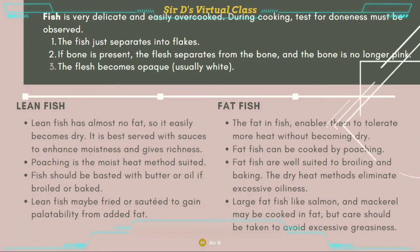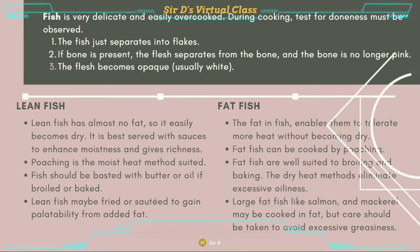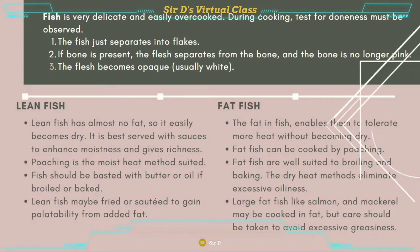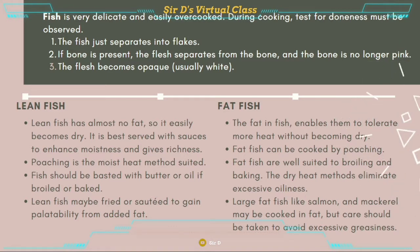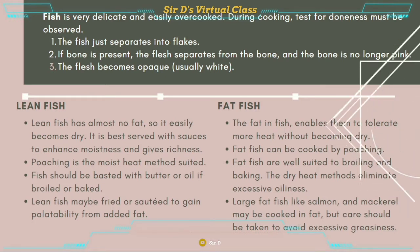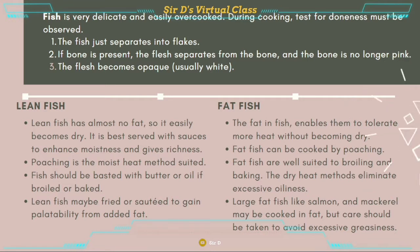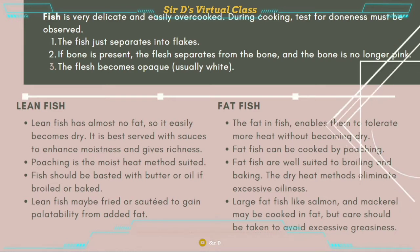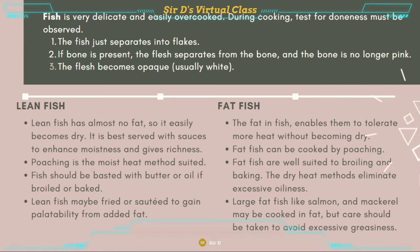Here are some other pointers to take note. For lean fish, remember that it has no fat or almost no fat, so it easily becomes dry. It's best served with sauces to enhance moistness and give richness. Poaching is the moist heat method best suited. Fish should be basted with butter or oil if broiled or baked. Lean fish may be fried or sauteed to gain palatability from added fat. Fat fish, on the other hand, can tolerate more heat without becoming dry because of its fat content. Fat fish can also be cooked by poaching and is well-suited to broiling and baking methods. The dry heat methods eliminate excessive oiliness of the fat fish.